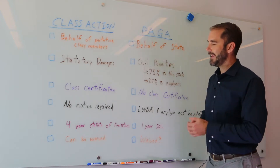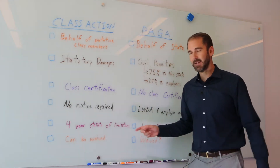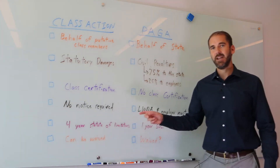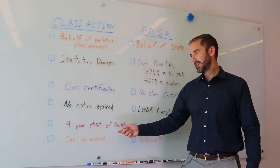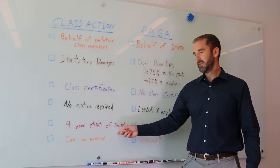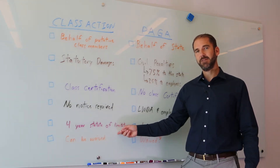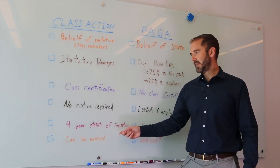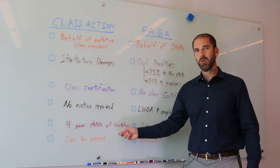Another key difference between a class action and a PAGA action is the statute of limitations. Under a class action claim in California, if there's an allegation of a Business and Professions Code section 17200 violation, the statute of limitations can reach back four years.